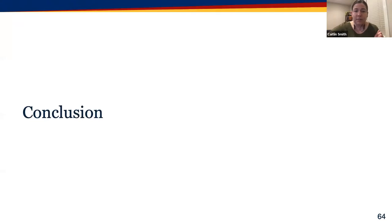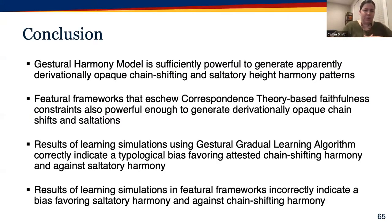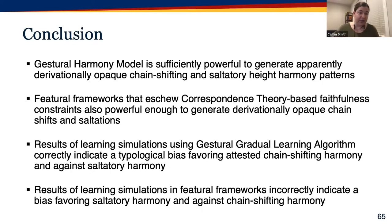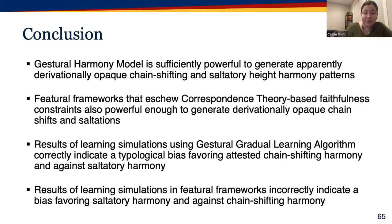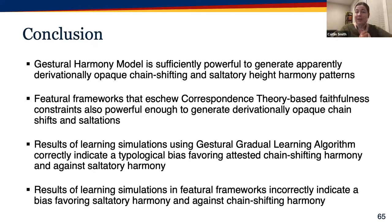Both feature-based approaches to generating under-application opacity in harmonic grammar incorrectly predict that saltatory height harmony is as easy or easier to learn and therefore more stably transmitted across generations relative to chain-shifting harmony — predicting saltatory harmony should be more widely attested cross-linguistically. This is contrary to real-world typology and contrary to our gesture-based learning simulations. To summarize: the gestural harmony model is sufficiently powerful to generate apparently derivationally opaque chain-shifting and saltatory height harmony; the gestural gradual learning algorithm correctly indicates a typological bias favoring attested chain-shifting harmony and against saltatory harmony; while feature framework learning simulations incorrectly indicate a bias favoring saltatory harmony.